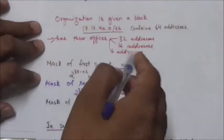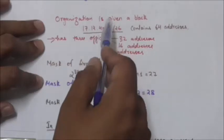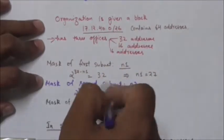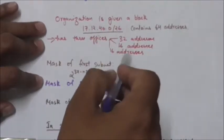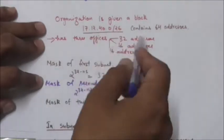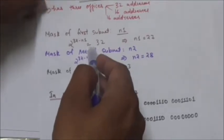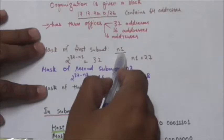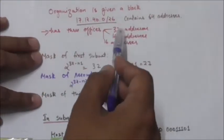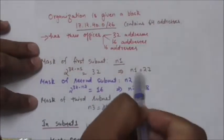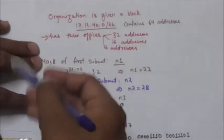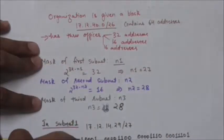The organization has three offices and needs to divide addresses into three sub-blocks of 32, 16, and 16. The organization's mask is /26, and we need to find the subnet masks. Suppose the mask of the first subnet is n1. This first subnet needs 32 addresses, so 2 raised to the power of (32 minus n1) must equal 32. Therefore, n1 equals 27. The mask of the first subnet is /27.